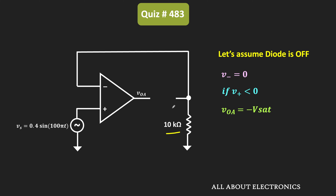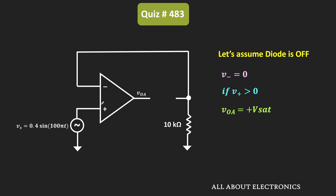But now whenever this Vs is positive, or in other words when this V+ is greater than 0, then in that condition this output voltage Voa will become plus Vsat, because now this V+ is greater than V-. So in this condition, the voltage at the anode of this diode is equal to plus Vsat, while the voltage at the cathode of the diode is equal to 0. And now in this condition, this diode will become forward biased.